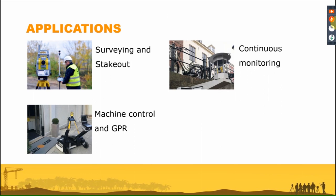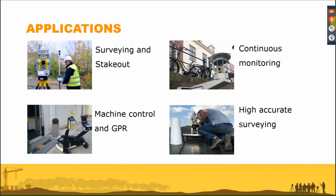We can also use it for special applications — for example, together with a georadar, where the robotic total station automatically measures the prism over the GPR and provides the position to the georadar software on a notebook. This is not something you can do with a manual total station. Similarly, we can use it for machine control. Also, with a motorized total station we have auto-targeting of the prism, so a robotic total station will generally have better accuracy than a manual one, because we are sure we measure the center of the prism.